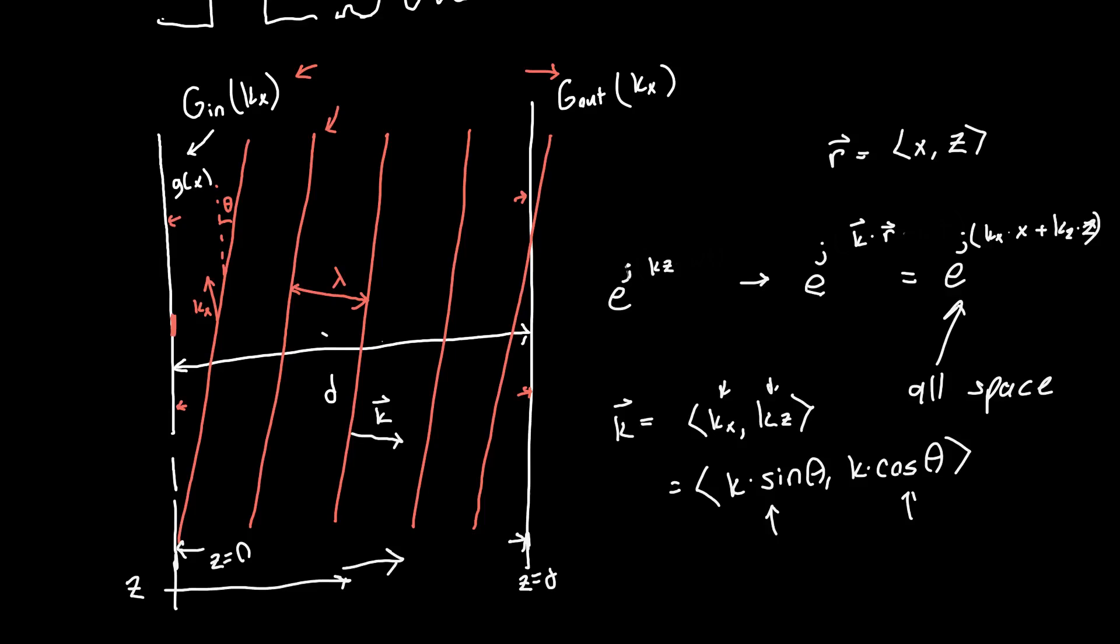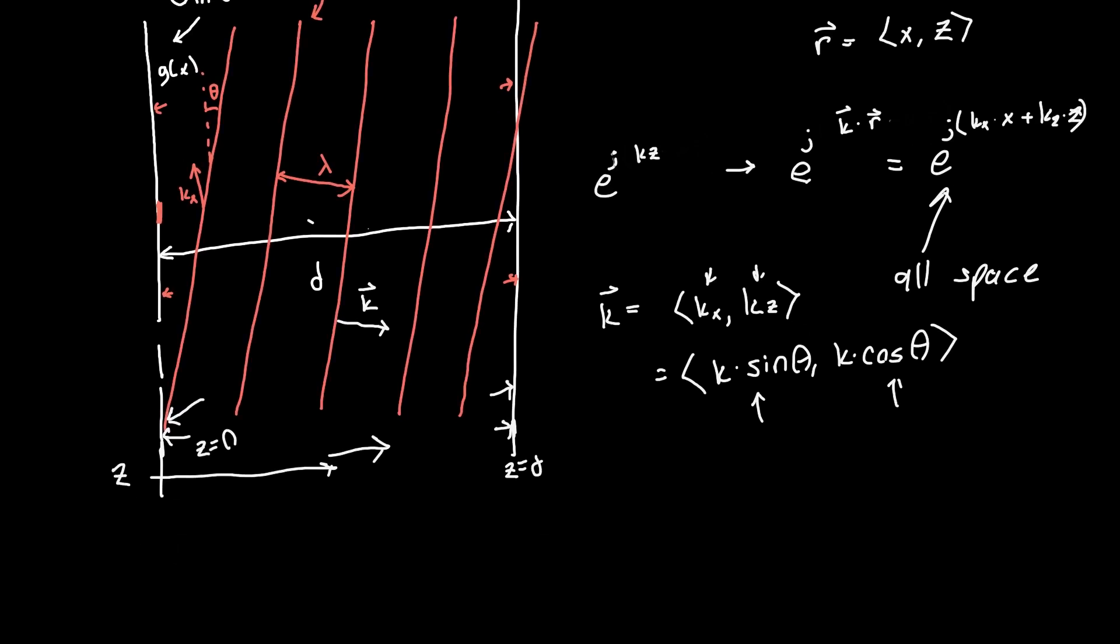So initially, our plane wave starts at coordinate z equals zero and ends at coordinate z equals d and nothing else changes about it. So let's just plug in the, let's just plug those in for the plane wave. So if we have z equals zero, our plane wave becomes e to the j, kx times x plus kz times zero. And so the kz drops out because it's multiplied by zero. And we're just left with e to the j, kx times x. And this is for any arbitrary plane wave. So with some arbitrary kx, we haven't said what it is.